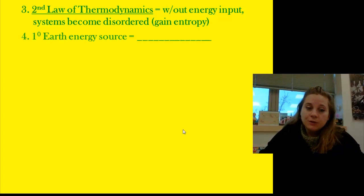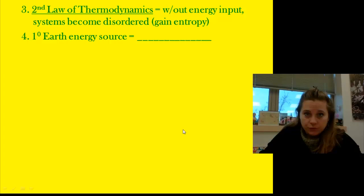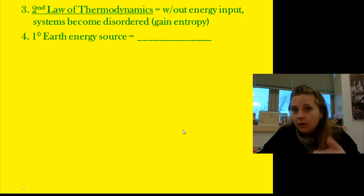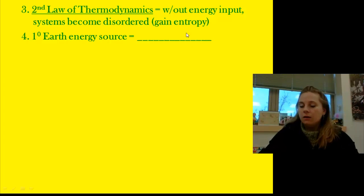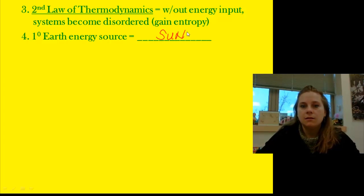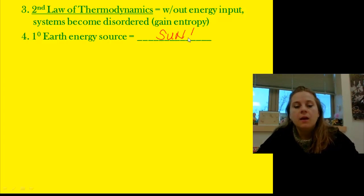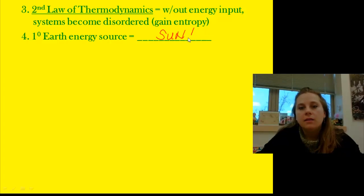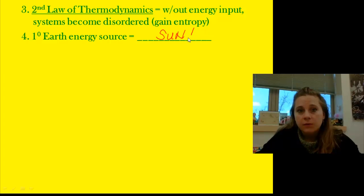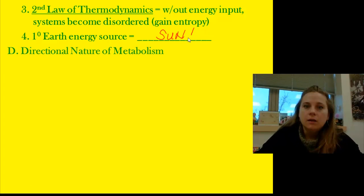So where does our energy come from? The primary energy source for our planet is the sun. That's where we get our energy input — it's what constantly sends energy to our planet, and without it we'd be in trouble.